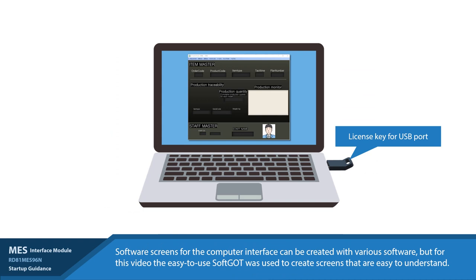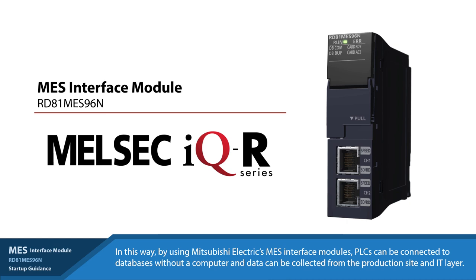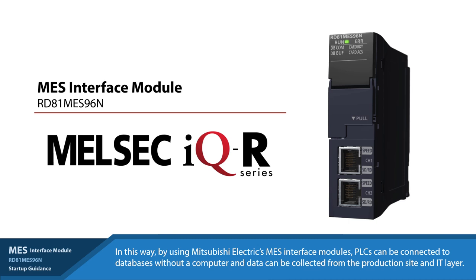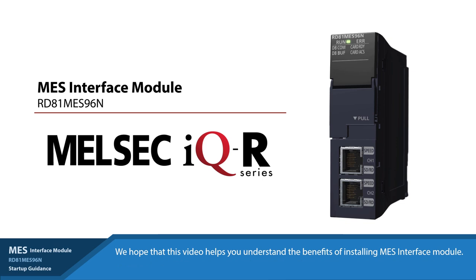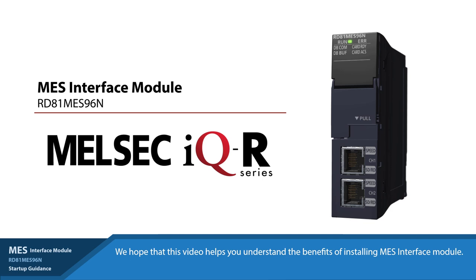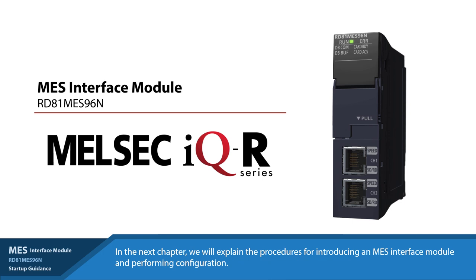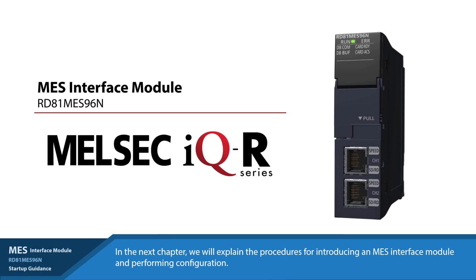Mitsubishi Electric also offers products like SoftGOT to easily create intuitive screens. These screens allow you to visualize your data and can be customized to fit your application's needs. In this way, by using Mitsubishi Electric's MES interface modules, PLCs can be connected to databases without a computer and data can be collected from the production site and IT layer. Next, we'll show another example of how data can be shared between a MES interface module and a database to provide a unique serial number and lot sizes, as well as provide final inspection to ensure no errors occurred.